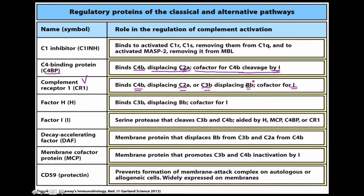Remember, C2α and Factor Bβ are very similar. The C1 inhibitor binds to activated C1R and C1S, removing them from C1Q so it can't undergo the cleavage reaction needed to form the active form. It also inhibits MASP2, removing it from mannose-binding lectin. In that context, C4 can't be cleaved, and neither can C2.